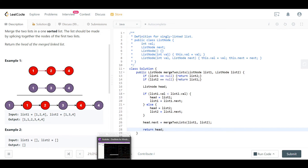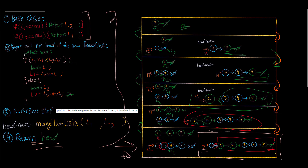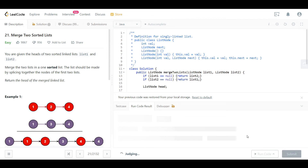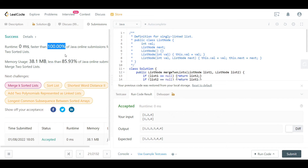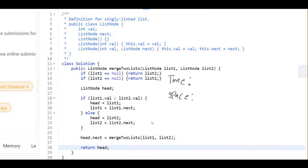Let's review the code one last time: base case, create head, if list one value is less than list two value head points to list one and advance list one, else do the same for list two, then the recursive step head dot next equals merge two lists with list one and list two — each time either list one or list two gets smaller until one reaches null. Return head. Let's run and submit — faster than 100%.